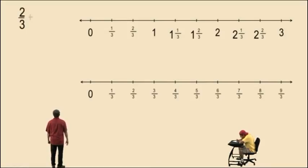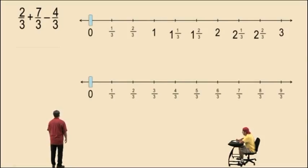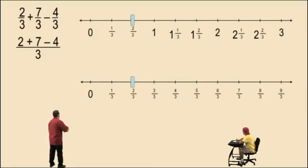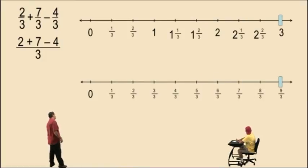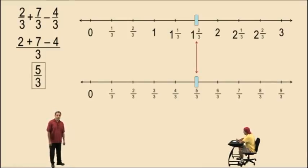Here we have 2 thirds plus 7 thirds subtract 4 thirds. Remember, we work with our numerators. Our denominator remains unchanged. Now let's do our calculation on the number line. We have 2 thirds plus 7 more thirds — that gives us 9 thirds. And now we take away 4 thirds and that gives us 5 thirds. And that is our final answer.